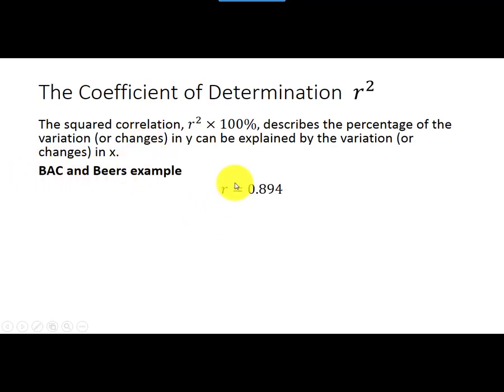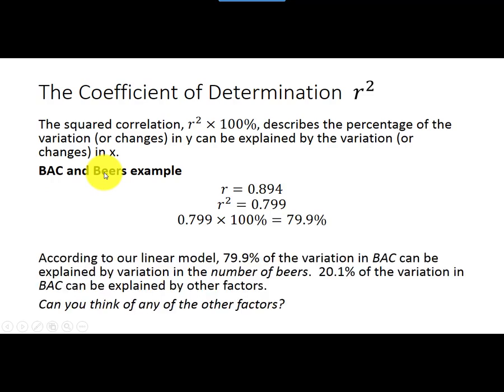So we're going to go back to this example. Our correlation coefficient for our blood alcohol content and beers example was 0.894. Now to get the coefficient of determination, we square r. So if you square 0.894, you'll get 0.799. I'll multiply it times 100% so that it's easy for me to talk about it in my sentence. So that's roughly 79.9%. So again, I'm going to take this definition up here and try to apply it with this idea of 79.9%, and of course our explanatory variable and our response variable. So according to our linear model,